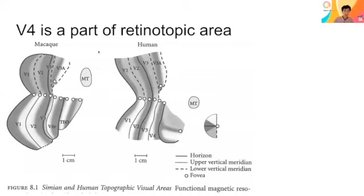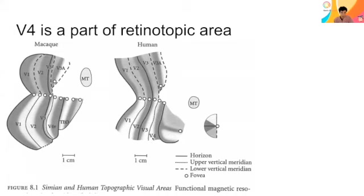In both macaque monkeys and humans, when the cortical areas of the occipital back of the head are inflated and presented as a map, the left side of the visual field maps onto the right hemisphere of V1, V2, V3, and V4. V4 is continuous from V3, which is why we use the terms V1 to V2, V2 to V3, and V3 to V4. This structure is similar between humans and macaques.